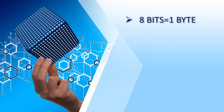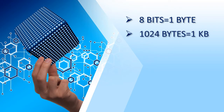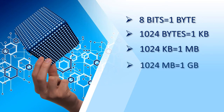8 bits is equivalent to 1 byte. 1,024 bytes is equivalent to 1 kilobyte. 1,024 kilobytes is equivalent to 1 megabyte. 1,024 megabytes is equivalent to 1 gigabyte. And 1,024 gigabytes is equivalent to 1 terabyte.